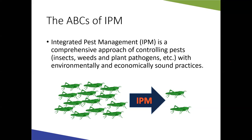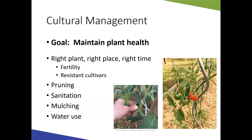An important part of IPM is scouting — going out into your tomatoes and garden regularly and looking at those plants to see what's going on. The earlier you catch problems, the easier they are to control. If you never go out and suddenly your plants are infested with disease or insects, it may be too late. Go out at least once a week, know what your plants should look like, and investigate anything unusual.